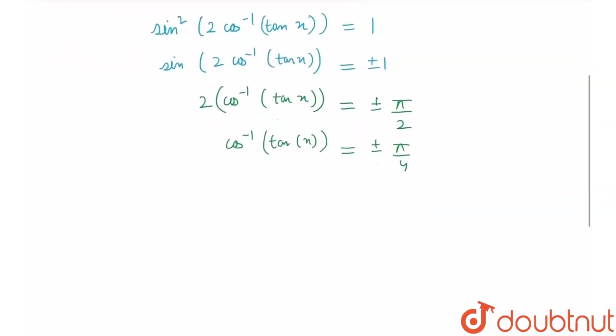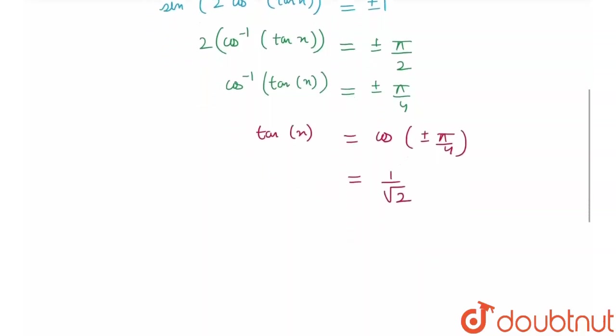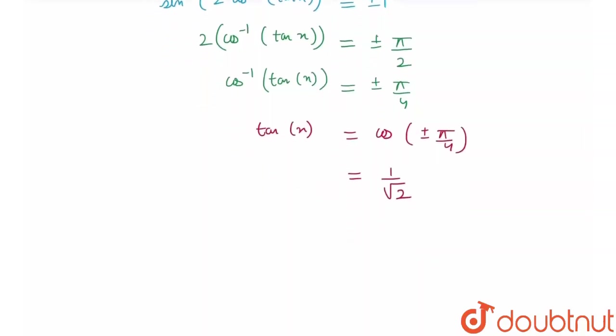Now, taking the cos inverse to the RHS, I'll get tan of x is equal to cos of plus minus pi by 4. And we know that I'll get the value as 1 by root 2. It would be for cos pi by 4, I'll get 1 by root 2 and for cos of minus pi by 4, I'll again get 1 by root 2.